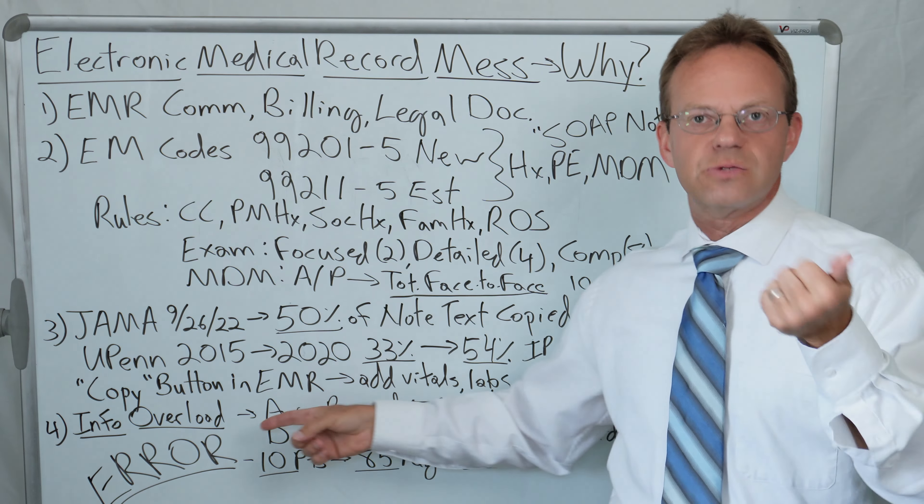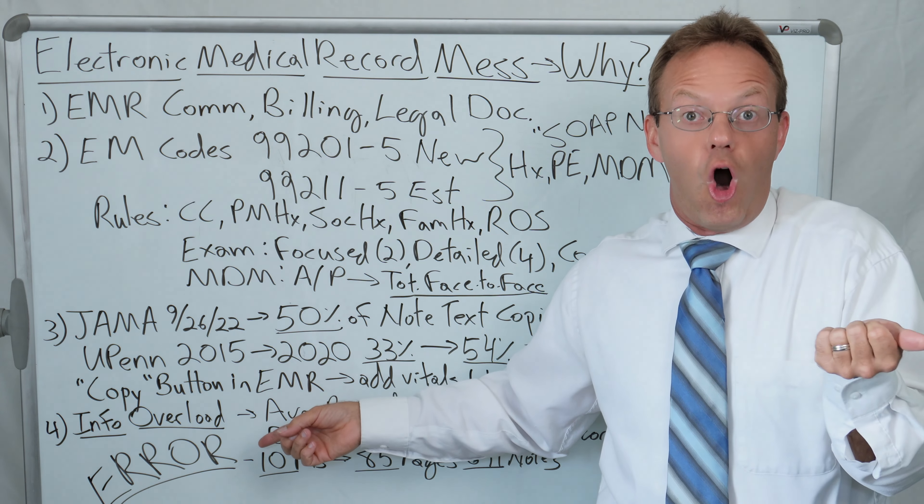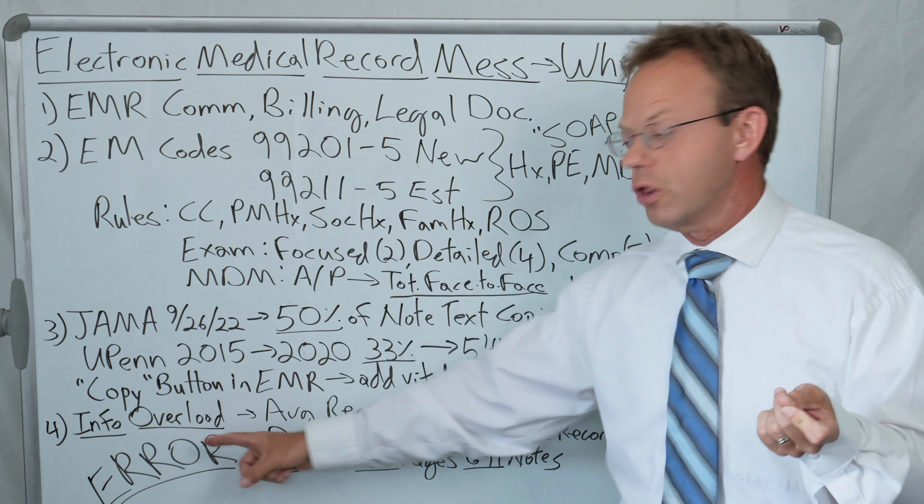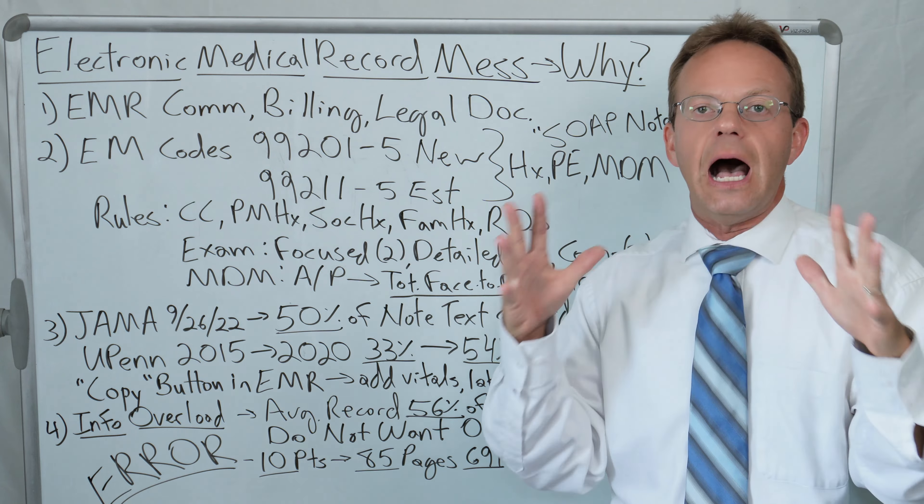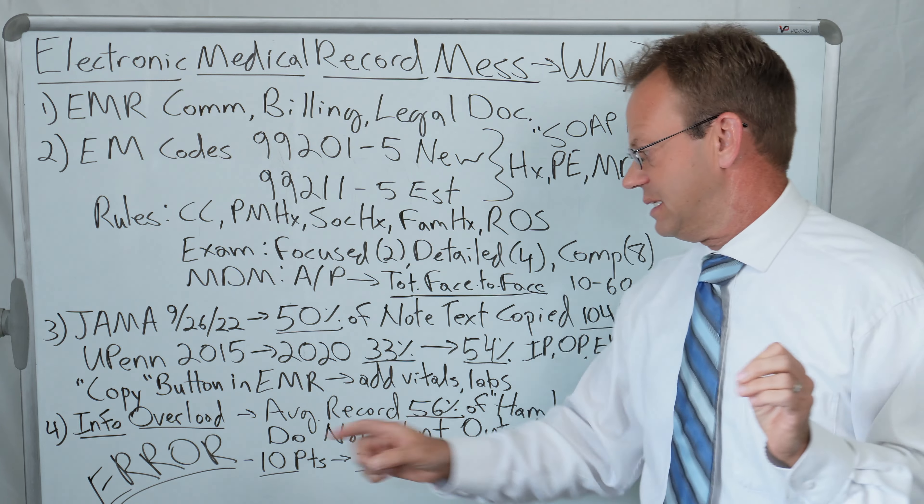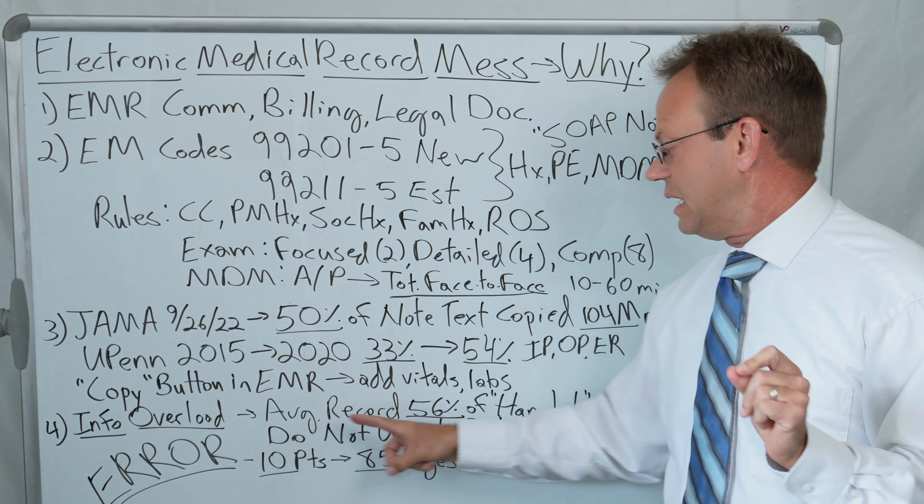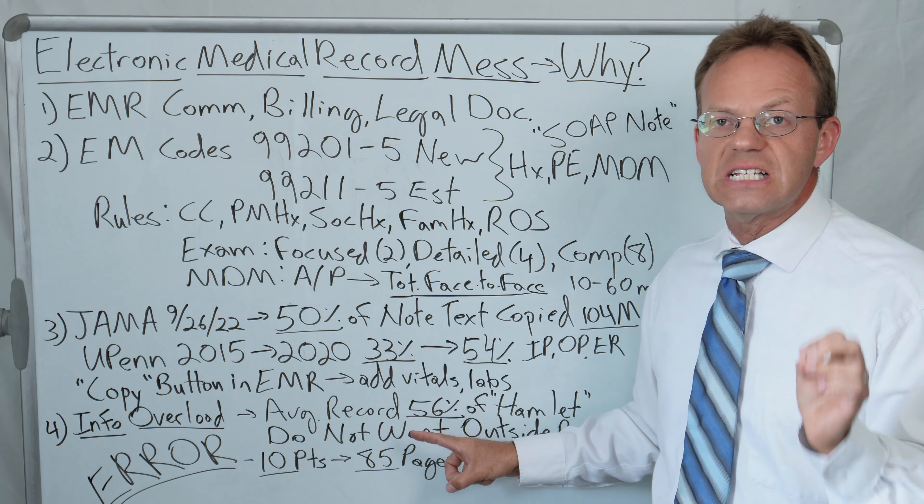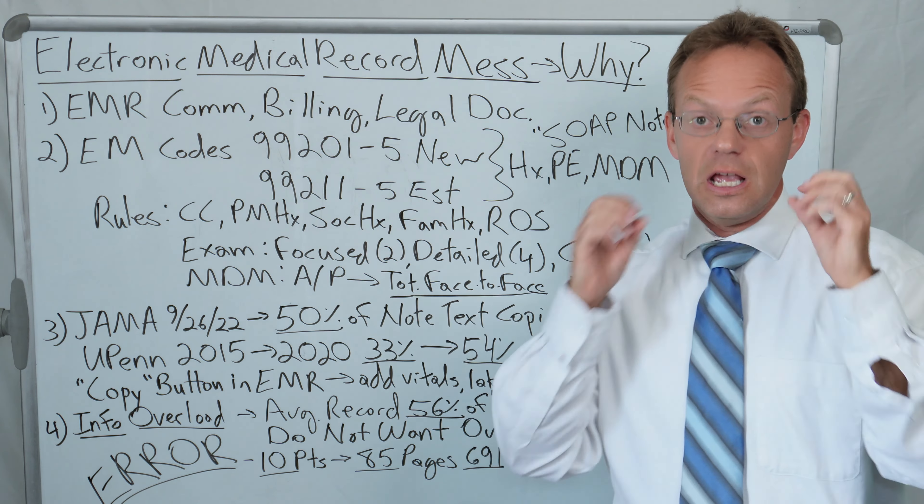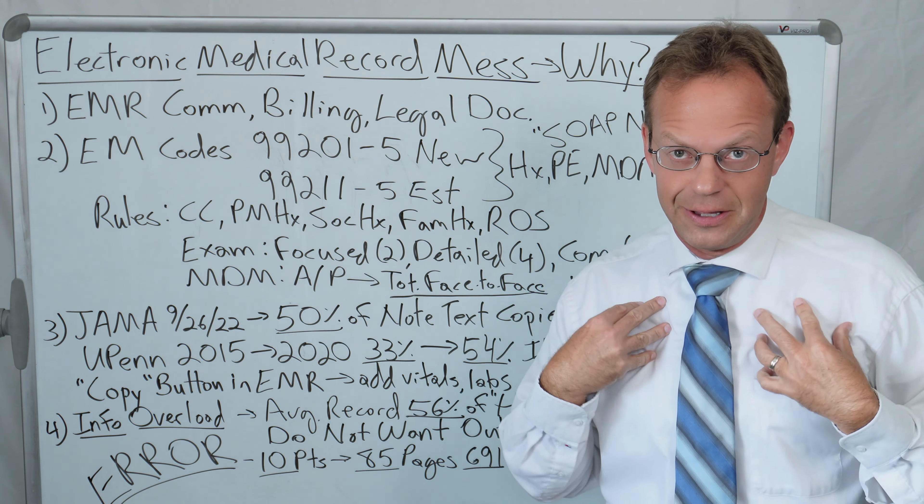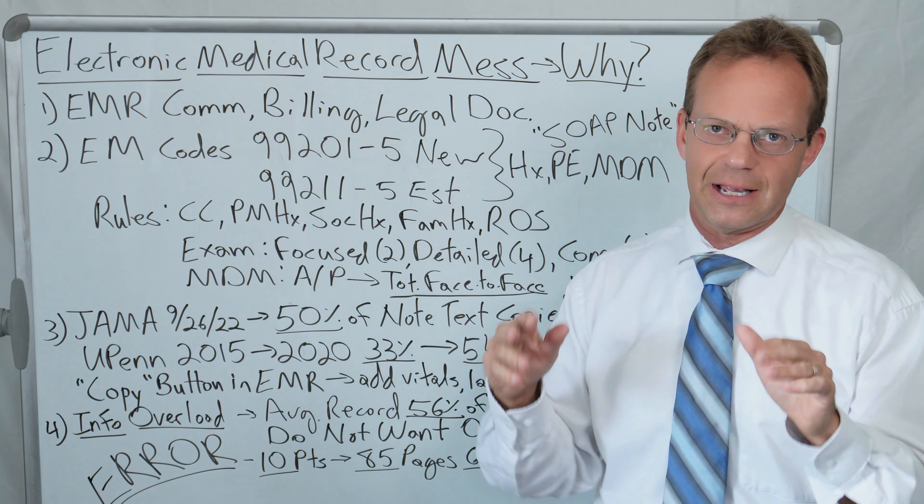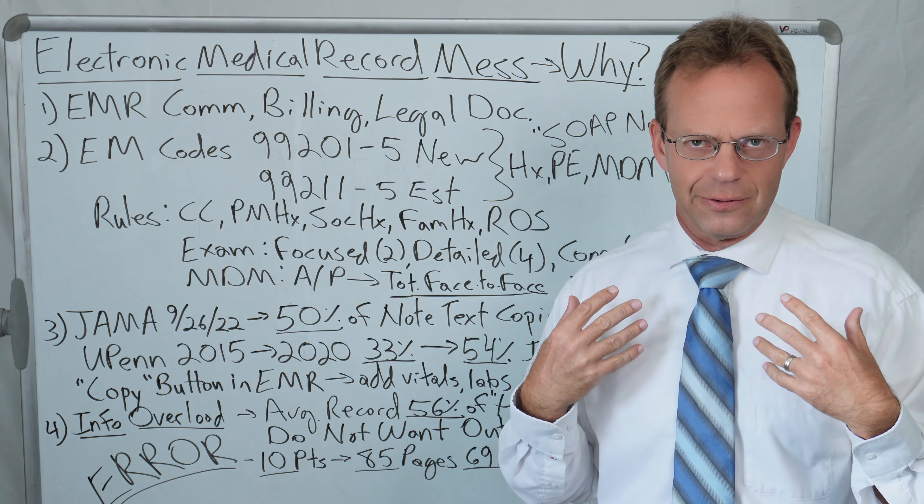So one problem is the information is just wrong. Two, it creates information overload. And the big problem with information overload is that it is just gobs of information for the doctor to go through, and therefore, they miss things. The average record is equivalent to 56% of Shakespeare's Hamlet. So you say, oh, just review the medical record. I'm an internist. I'm a professional medical record reviewer. That's a huge part of my job. Surgeons cut, internists review medical records.